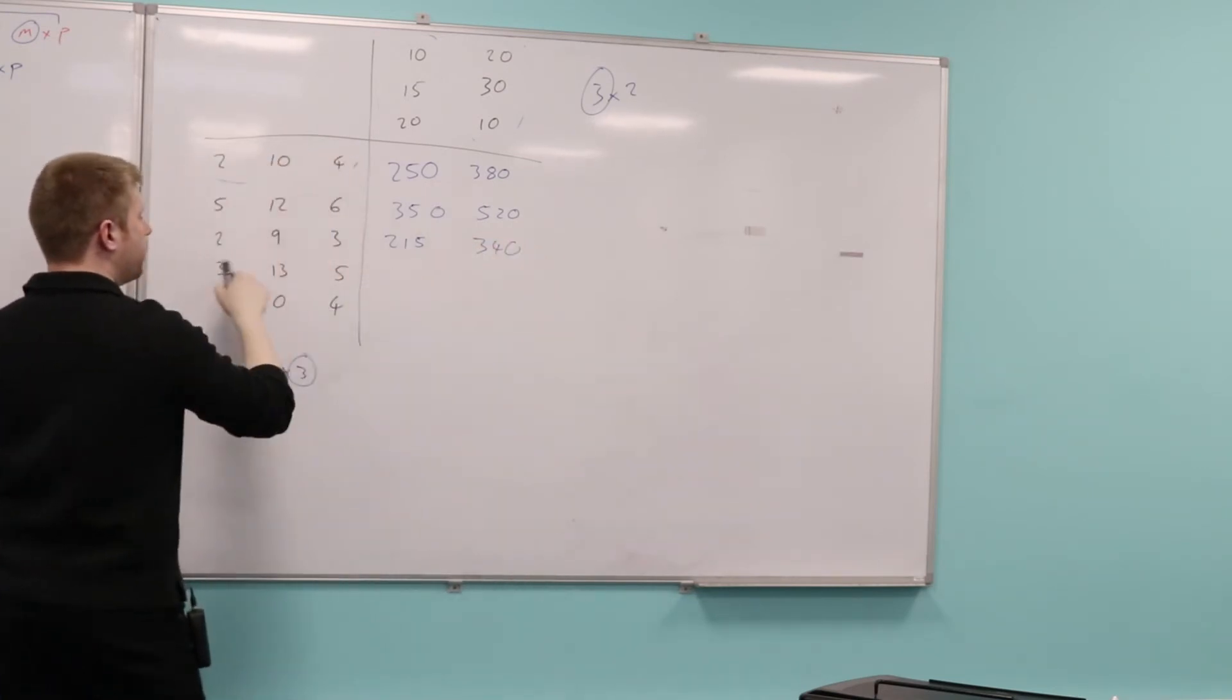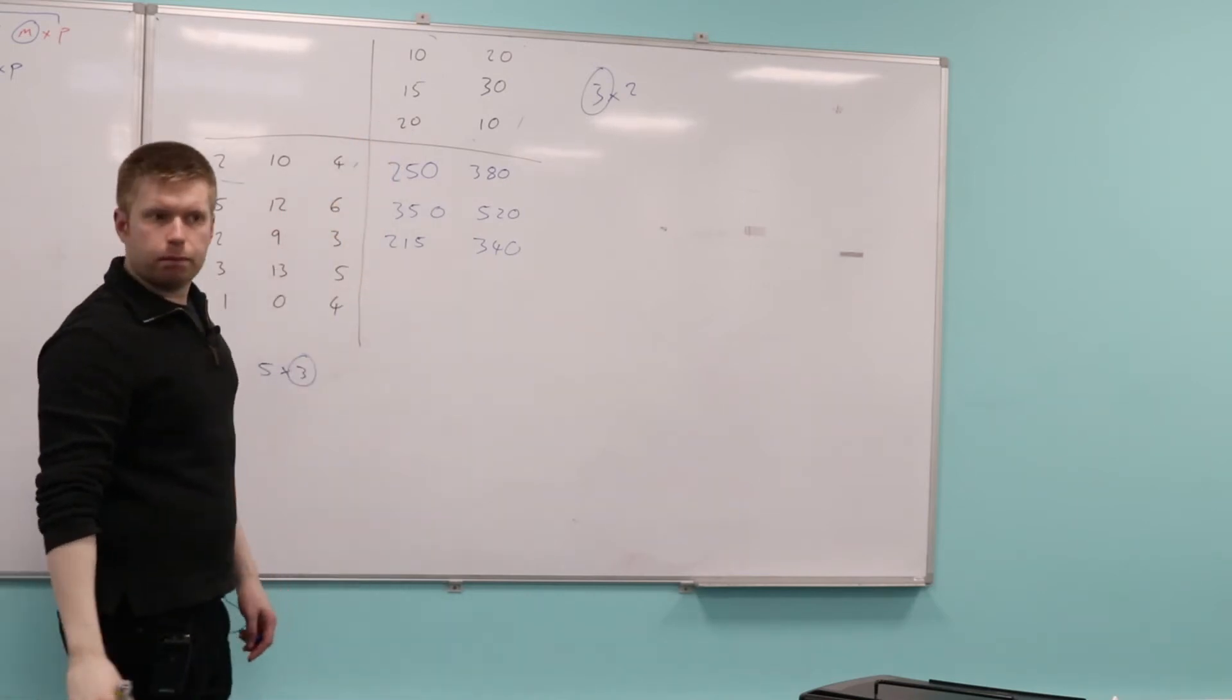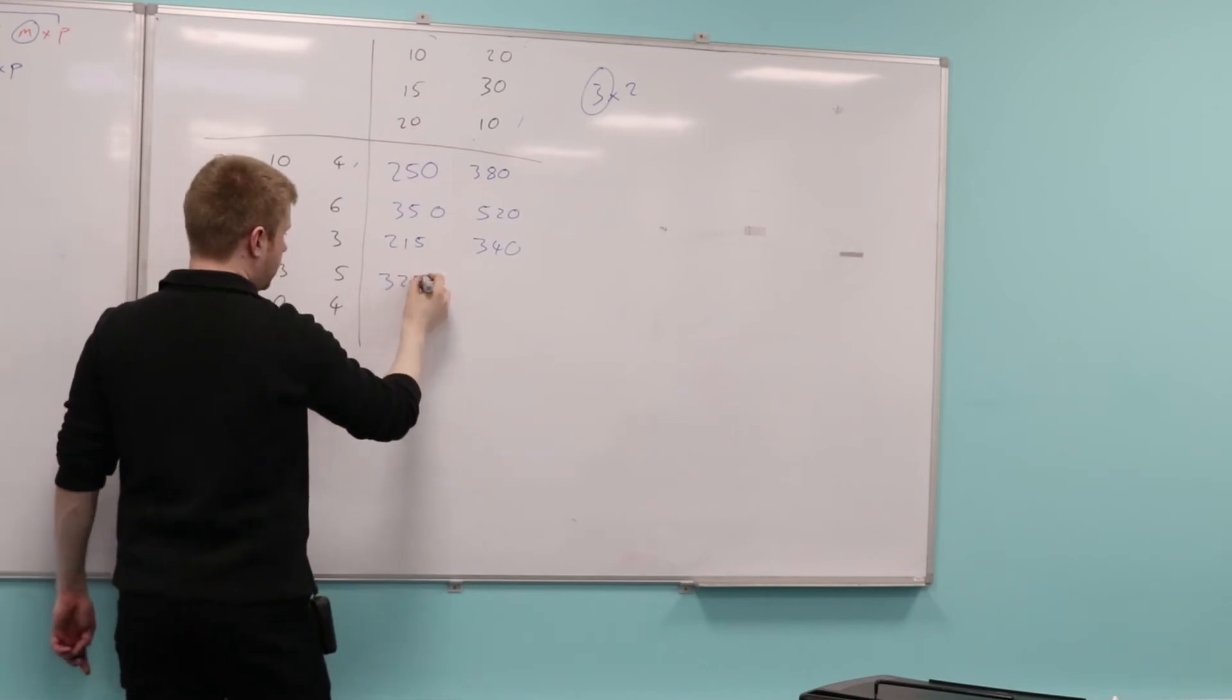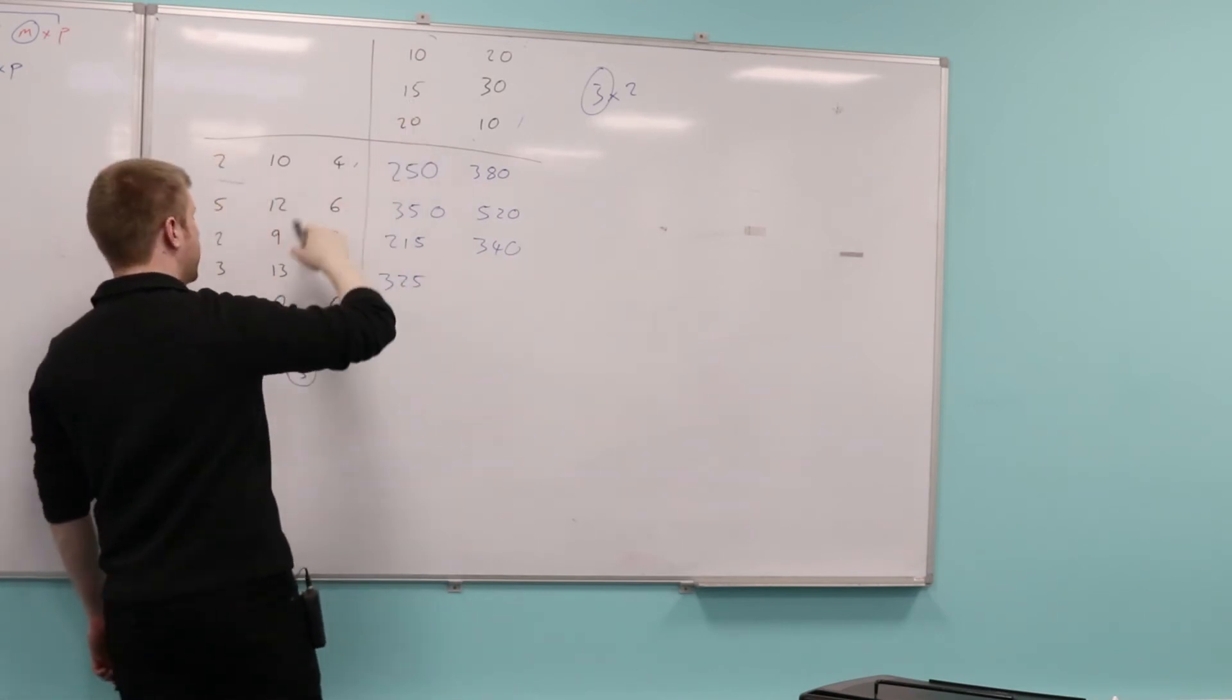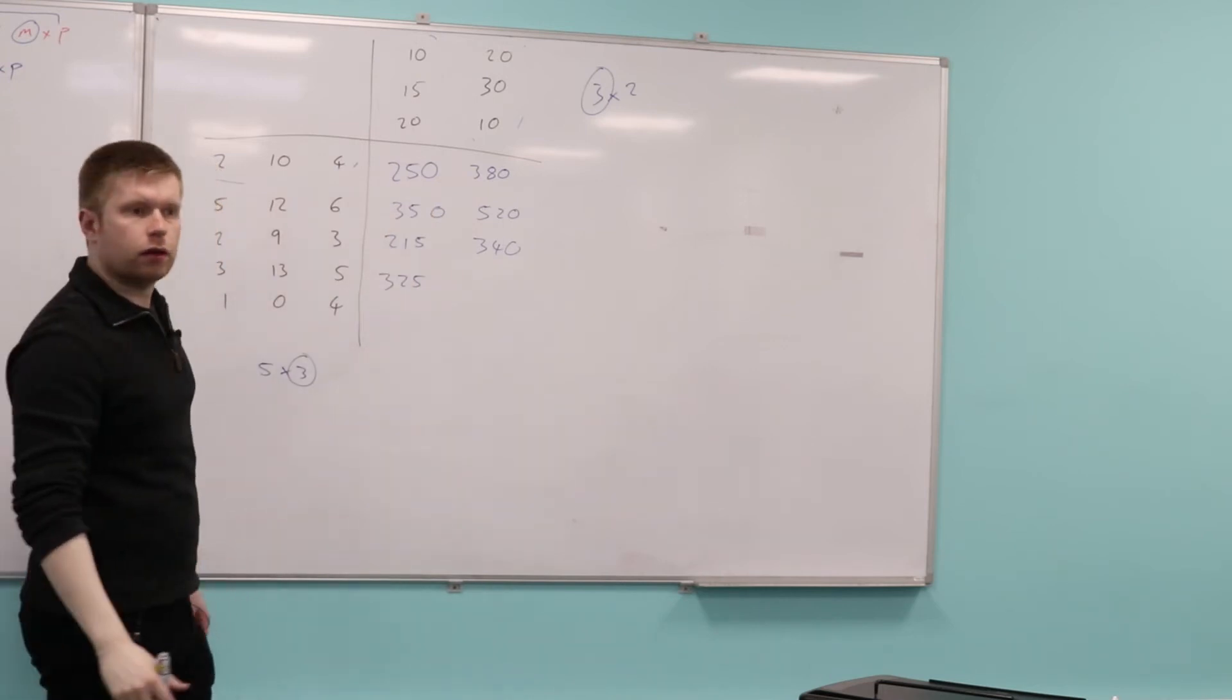The element that goes here would be 3 times 10, 13 times 15, 5 times 20, which is 325. And the element goes here, 3 times 20, 13 times 30, 5 times 10... 500.